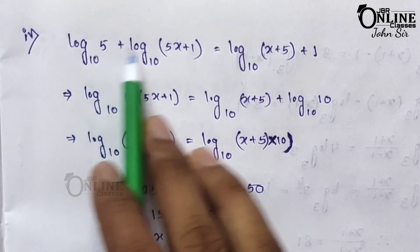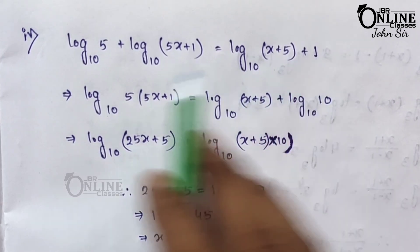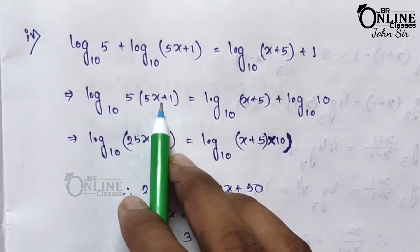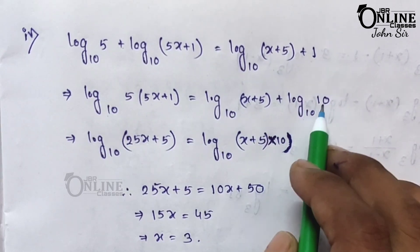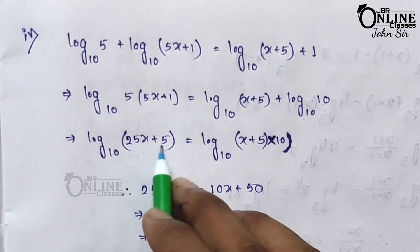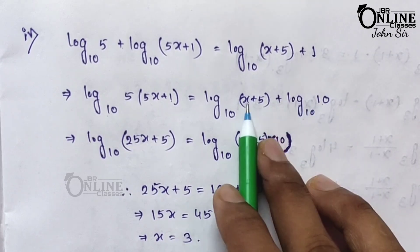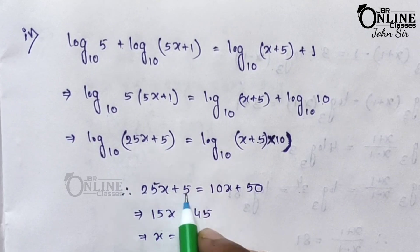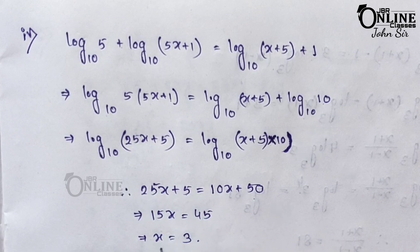Fourth equation: log 5 + log(5x + 1) = log(x + 5) + 1. Using log a + log b = log(ab), the left side is log[5(5x+1)] = log(25x + 5). On the right, 1 = log 10, so right side is log[10(x+5)] = log(10x + 50). Comparing: 25x + 5 = 10x + 50, giving 15x = 45, so x = 3.